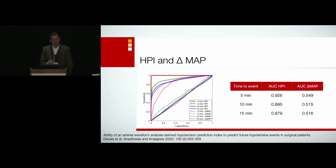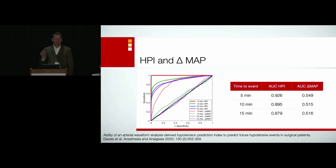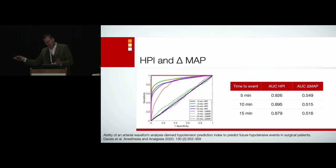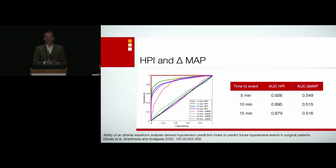HPI, however, does. The area under the curve at 5 minutes is 0.92; at 15 minutes away from hypotension, it's about 0.87. All predictive algorithms suffer from the fact that the further away you get from an event, the harder it is to predict — though these are excellent AUCs throughout. It's like weather forecasting: right now it's sunny and you don't need an umbrella, but tonight you're not quite as sure. HPI at 5, 10, 15 minutes before the event predicts it much better than any other parameter because it's looking at 23 features — each a combination of different features — making it data-rich and far better than single parameters.